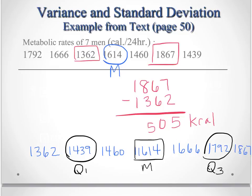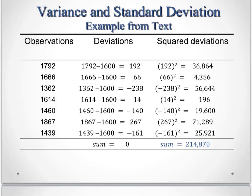So on to finding the variance and the standard deviation. If we take each observation, the mean ended up being 1600. You can easily calculate that yourself. And take each, its deviation from the mean, and then square that deviation from the mean. And add them all up together.